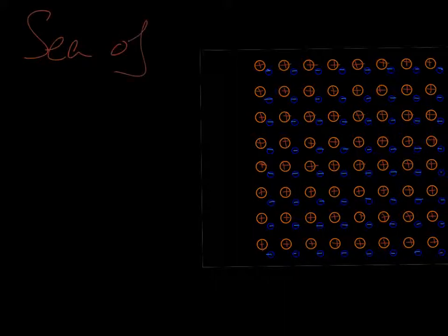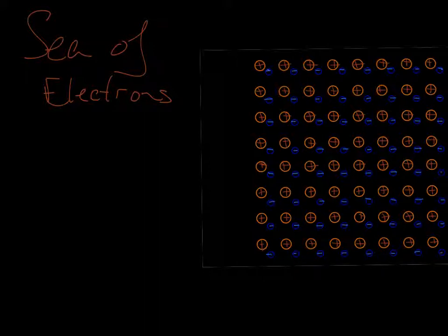The orange circles with the plus signs in the middle are positive ions, and the blue circles with minus signs in the middle are electrons. As these atoms come together to form a metal, each atom contributes one or two or three or four electrons, and what these electrons create is what we call a sea of electrons. This sea of electrons is actually one of the biggest reasons why metals are typically such good conductors, especially at room temperature. Each one of these electrons can actually move through the metal with relative ease, because it's not bound to any one atom.